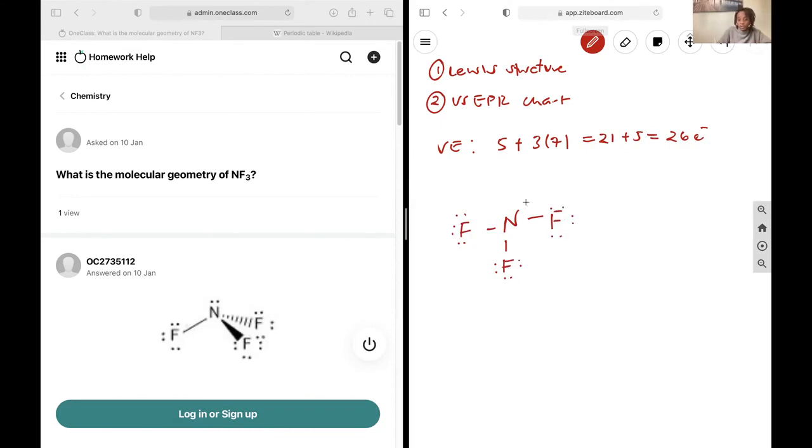See if I have any leftover electrons to place on my central atom. 2, 4, 6, 8, 10, 12, 14, 16, 18, 20, 22, 24. I have 2 electrons, the nitrogen needs 2 electrons to fill in its octet, that makes the most sense.